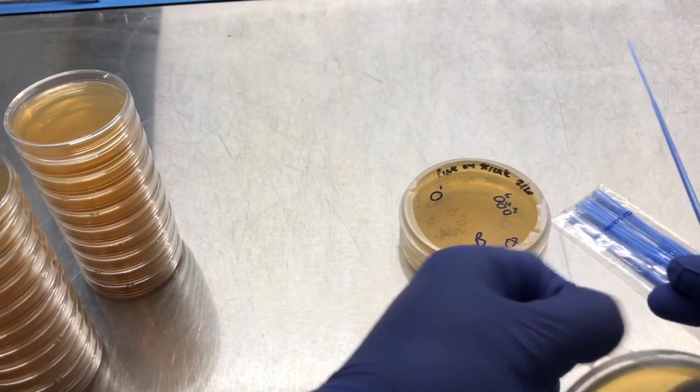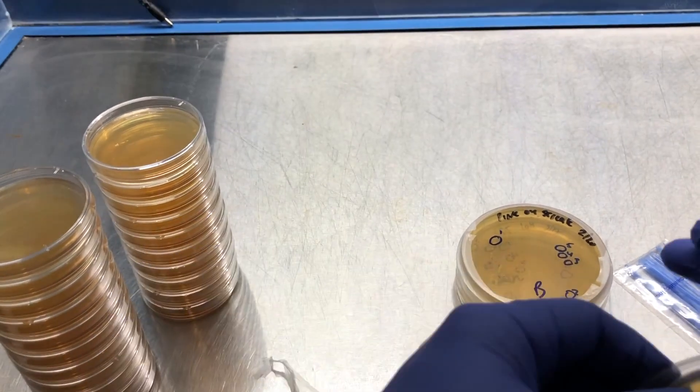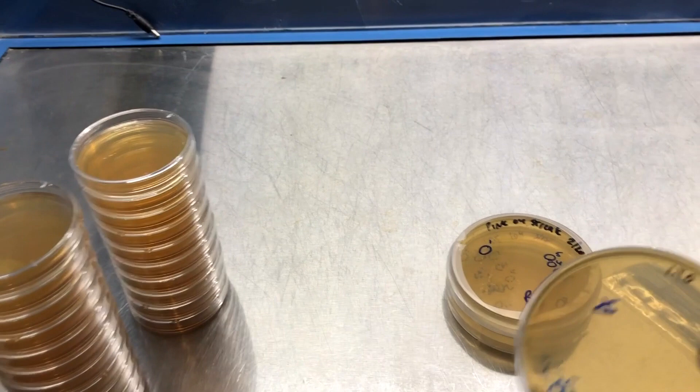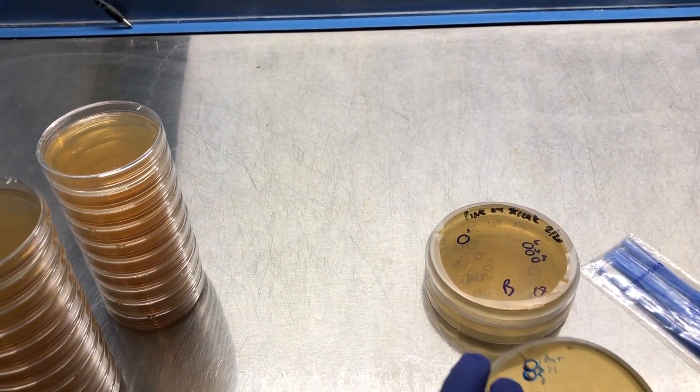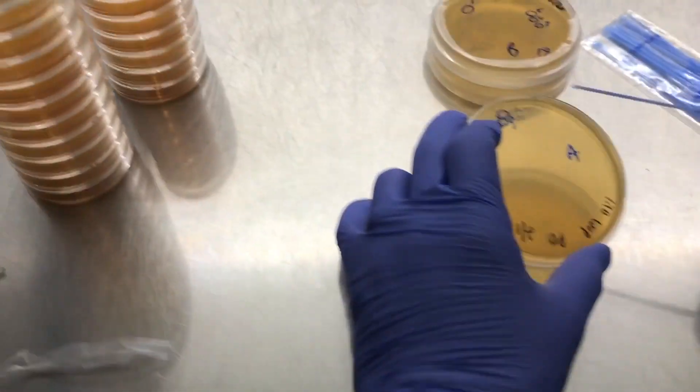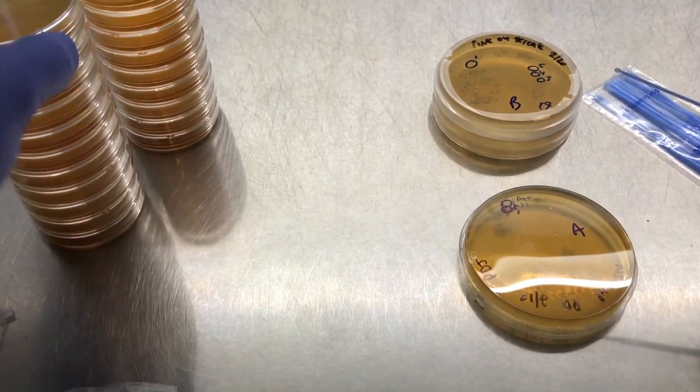So first thing you want to do is take off your parafilm and number one is the one that is closer to the middle. So the number one colony is going to be closer to the middle, that's what I'm going to be isolating first.